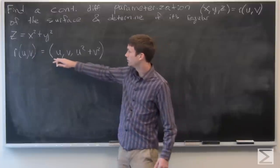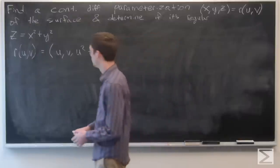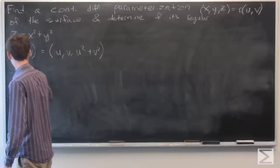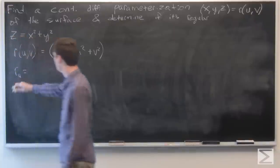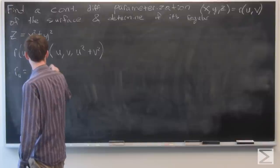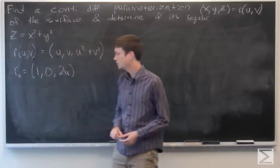So this is a pretty good parameterization. Let's see if it's local regular. So let's take the partial derivative of r with respect to u. We get 1, 0, 2u.